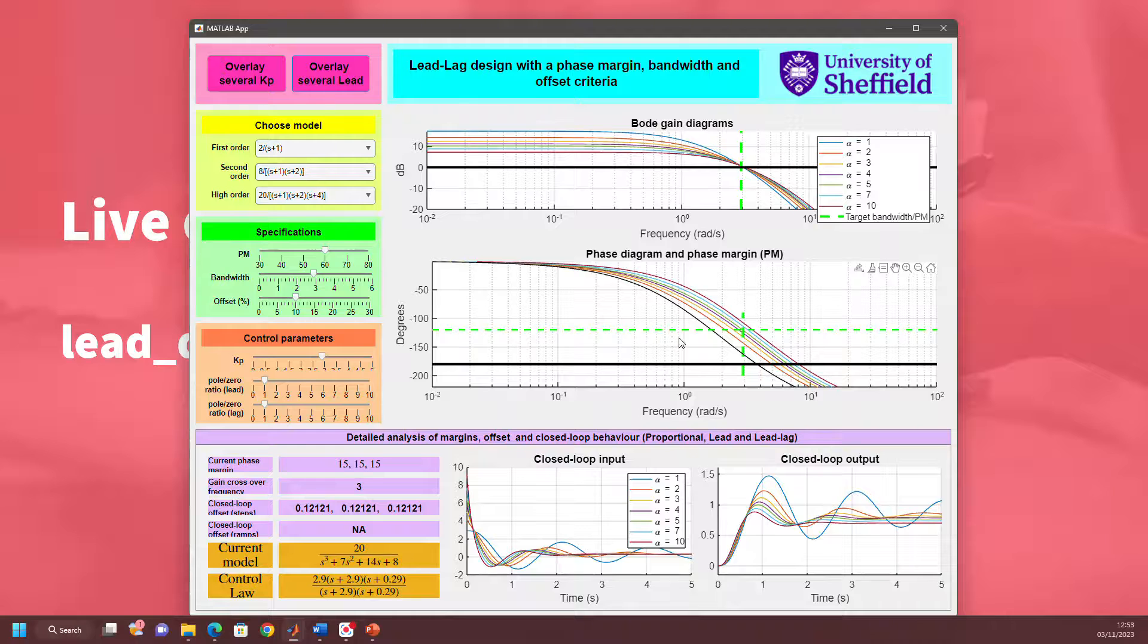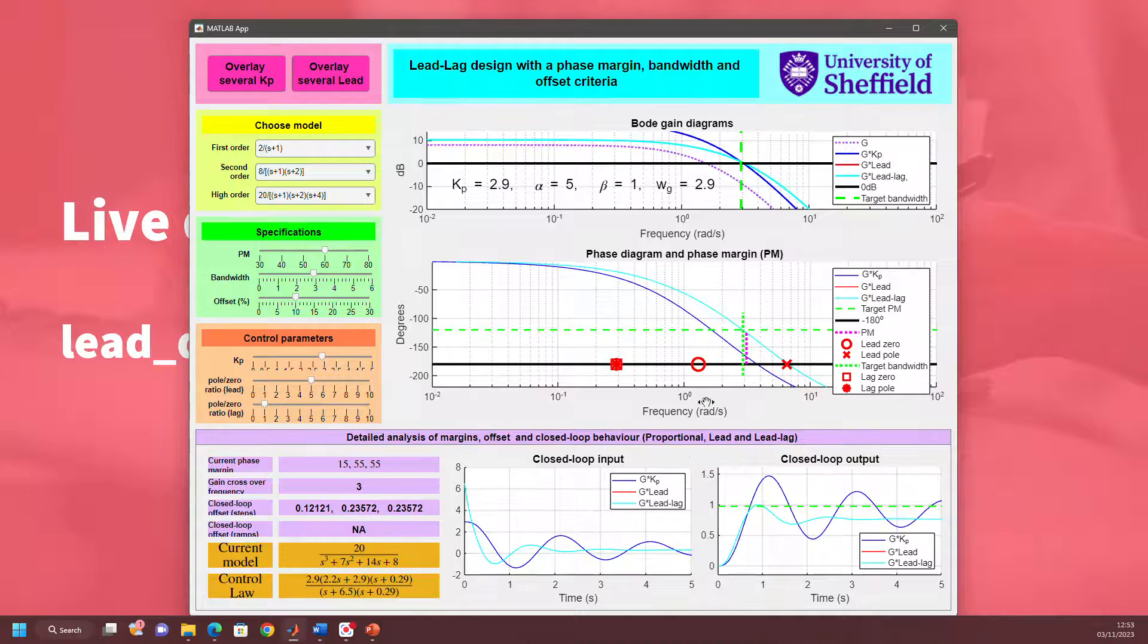You can see different choices that have been called alpha here will give me different phase margins. I'm going to be needing something roughly that looks like the green line, which looks like alpha's about 5. So let's try 5 and see what happens. Here's my compensated plot now with just the lead part. You can see the current phase margin is now about 55.